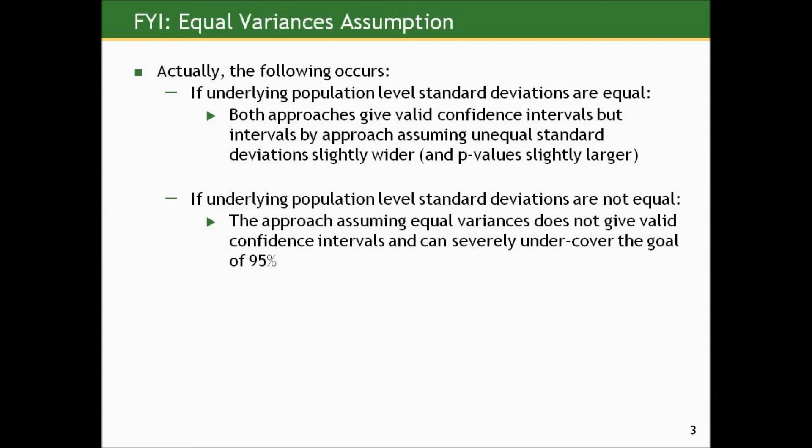But it doesn't miss the boat — it's just more conservative than the approach assuming equal variation. However, the converse is not true. If the underlying population-level standard deviations are not equal, then the approach assuming equal variances does not give valid confidence intervals and can severely undercut the goal coverage of 95%. So the approach that works best all of the time, regardless of the truth about the underlying population standard deviations, is the one assuming unequal standard deviations.